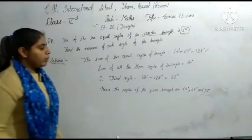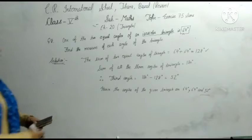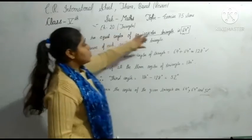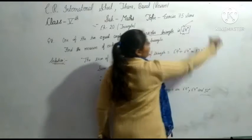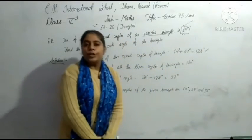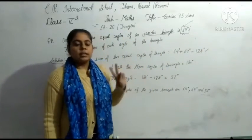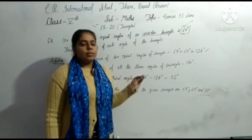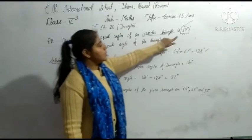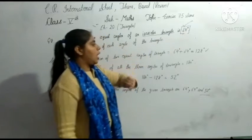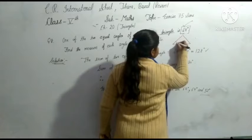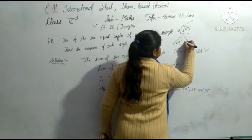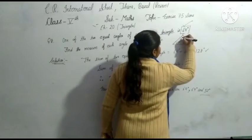Now how do we understand this question? Look at the isosceles triangle, one angle is 64 degrees. We know that isosceles triangle means it has two angles, so if this is 64 then two angles equal means this is 64 degrees and this is 64 degrees.